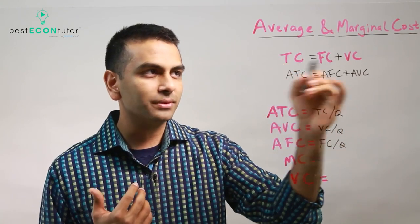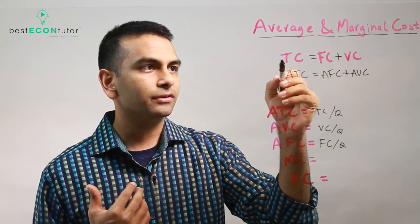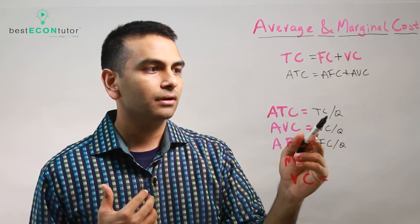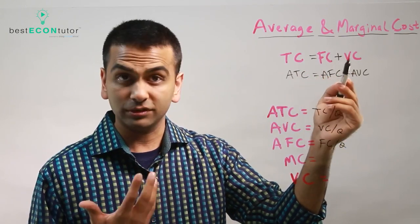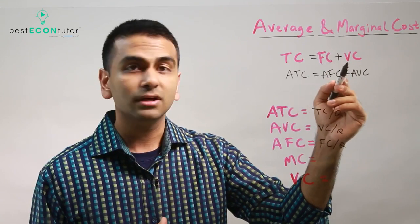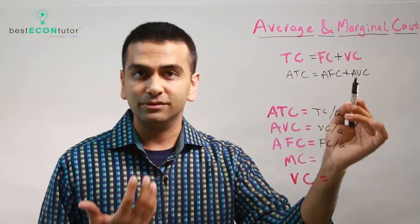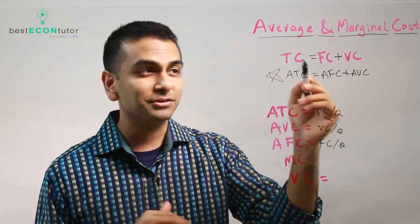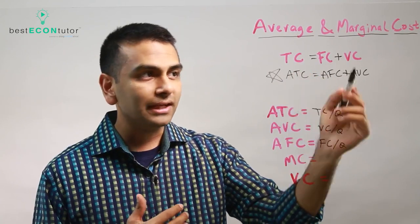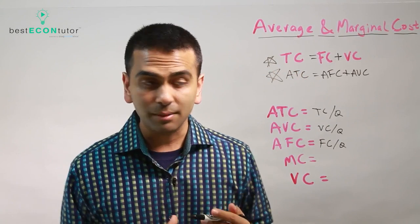The reason is simply if you start with this equation, if you divide both sides by quantity, here you'll get TC over Q, which is ATC. And here you'll get that whole thing divided by Q, which you can split as FC over Q plus VC over Q. And FC over Q is AFC, VC over Q is AVC. So that's how you can come up with this equation. So you technically don't need to memorize it. You can come up with it. But now that you've seen it, you can use either one, depending on what you need for that problem.